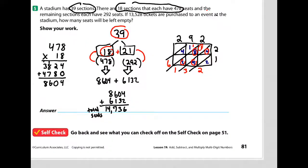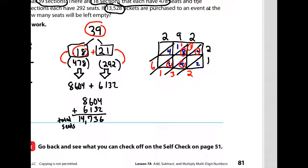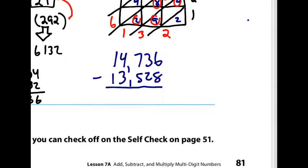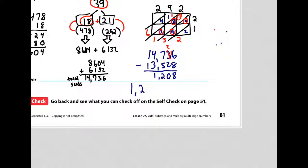13,528 of those seats will be full because people bought tickets. To find the empty seats, we subtract: 14,736 total seats minus 13,528 tickets sold. Sixteen minus eight is eight, two minus two is zero, seven minus five is two, four minus three is one, one minus one is zero. In the end, there will be 1,208 empty seats.